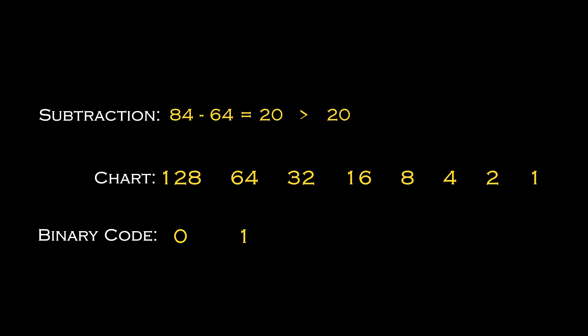Move on to the next number on the chart. Since 32 is larger than 20, we add a 0 to the binary code section. Move on to the next number, which is smaller than 20, and so on — add a 1 and subtract the number on the chart from our remaining 20. This will leave us with 4.